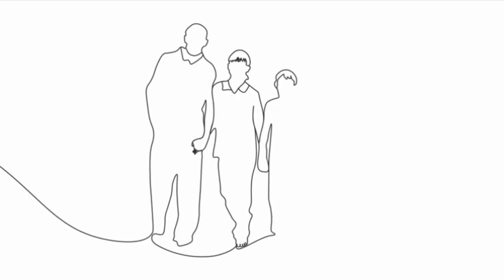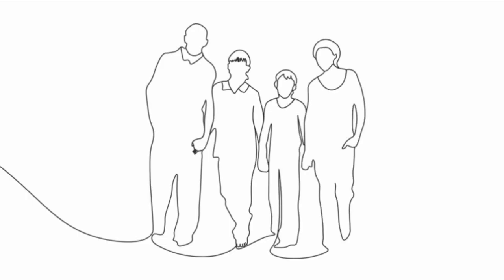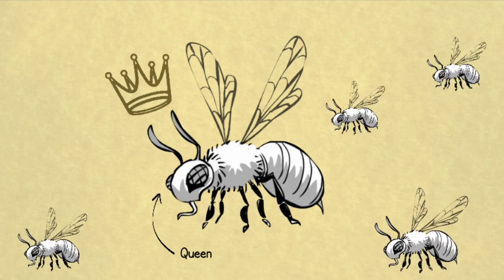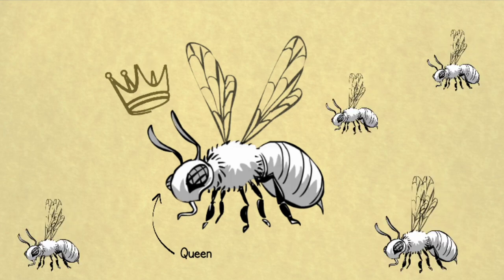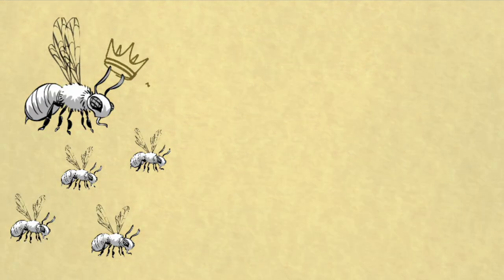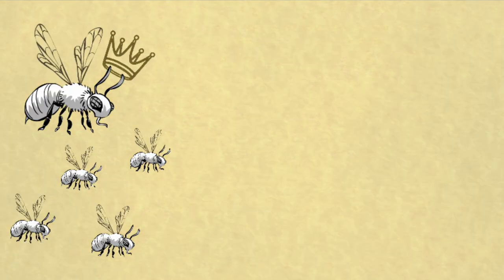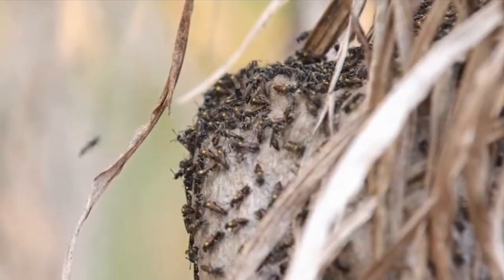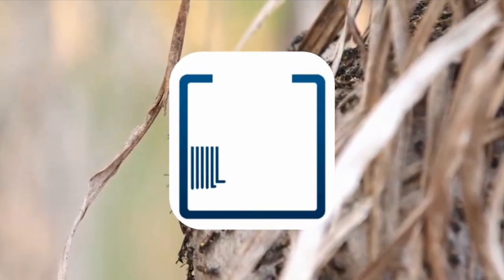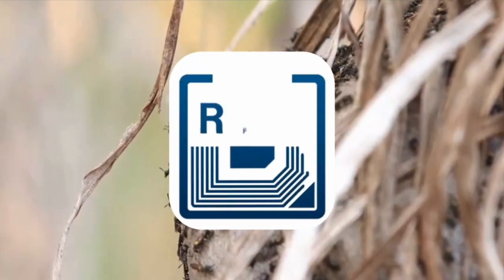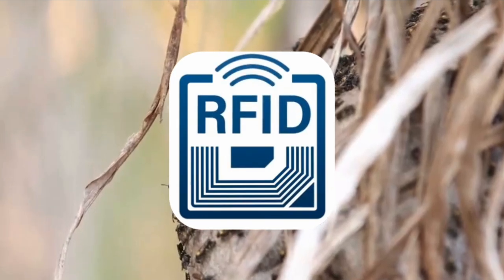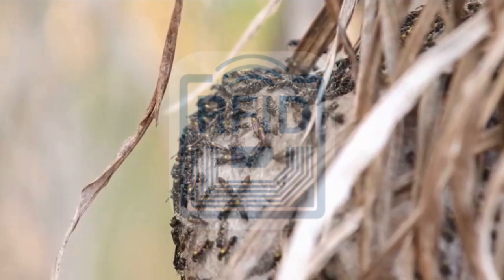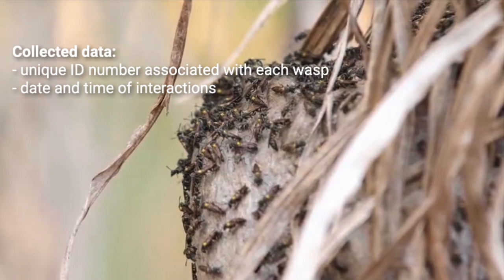Eusocial colonies are like a big family, where there's usually just one female — the queen — who's able to lay eggs, and most of the other wasps are her kids. Scientists recently found out that these complex insect societies often interact a lot with other nearby groups of insects, kind of like humans. To understand these interactions, scientists used radiofrequency identification, RFID. These RFID tags act like tiny, lightweight trackers that allow researchers to gather detailed, up-to-date data on each wasp.